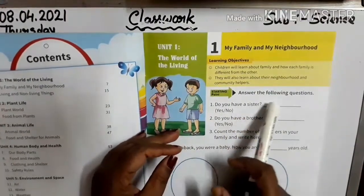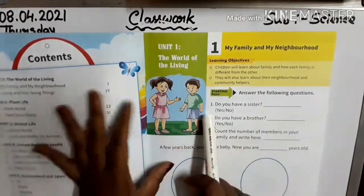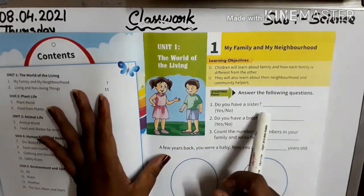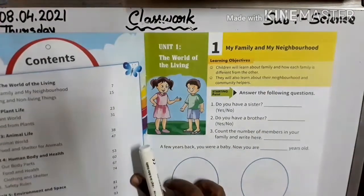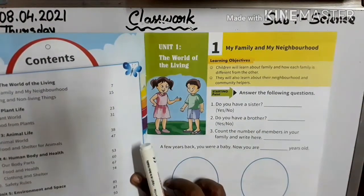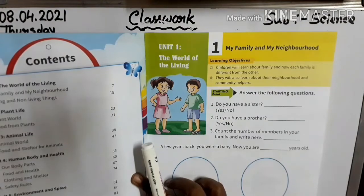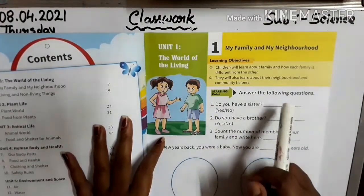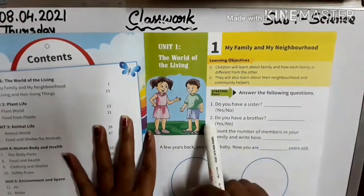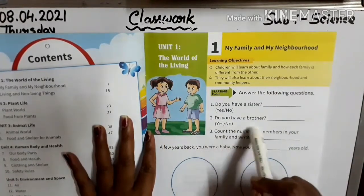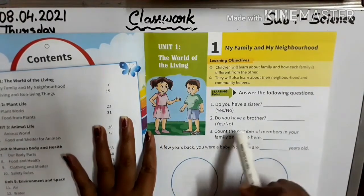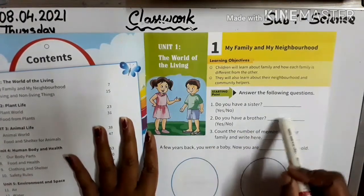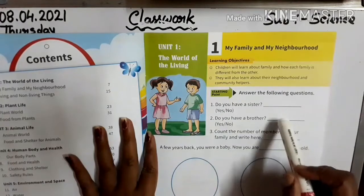Answer the following questions. Number one: do you have a sister? If you have a sister, write yes. Otherwise, write no. Question two: do you have a brother? If you have a brother, write yes. Otherwise, write no.